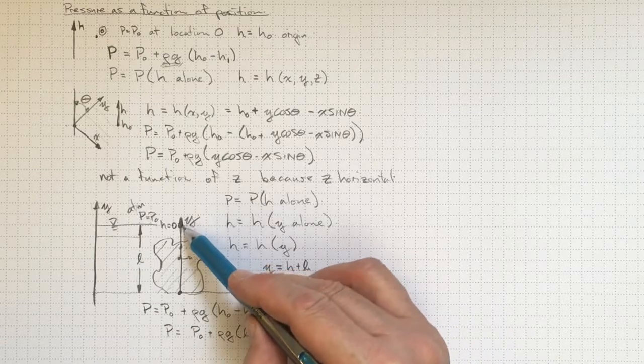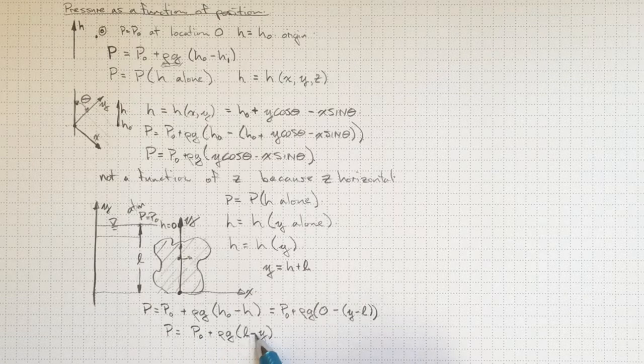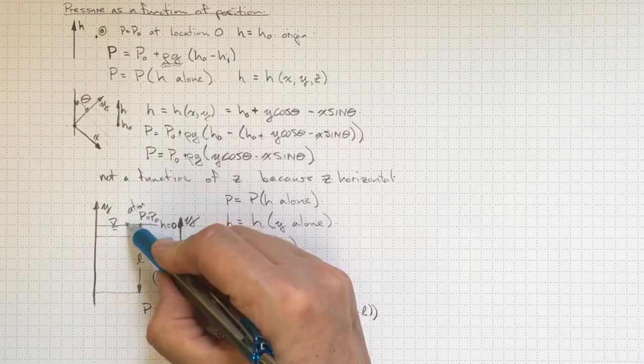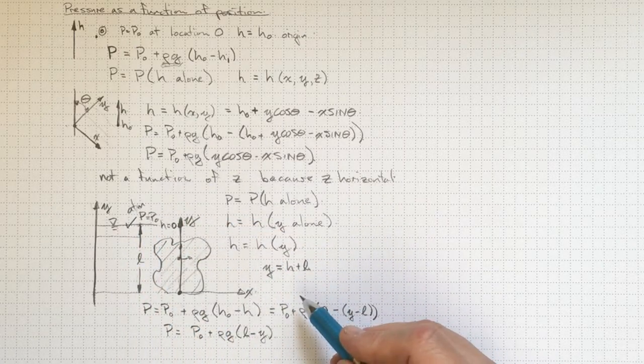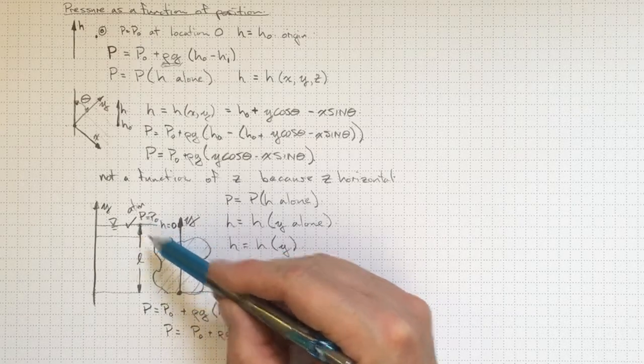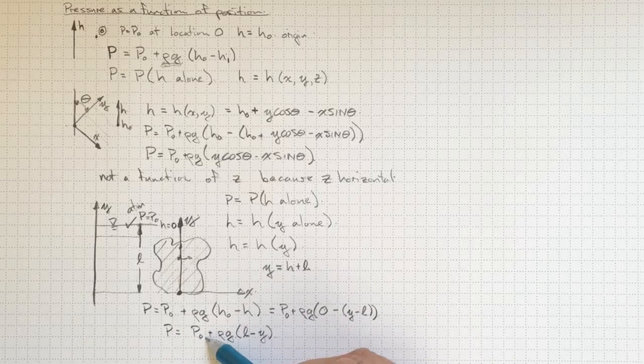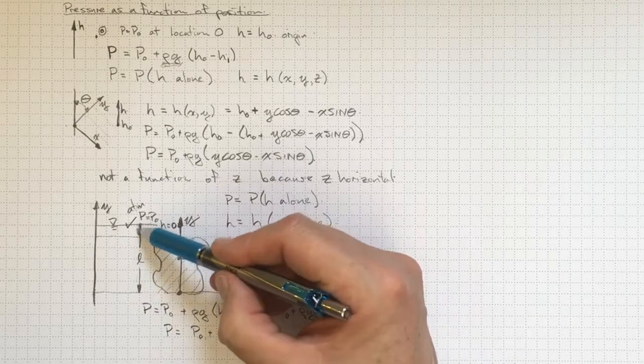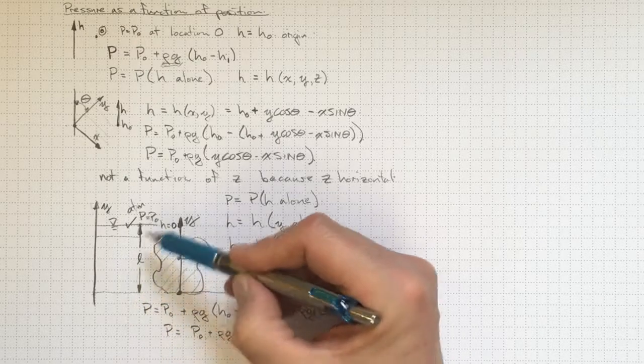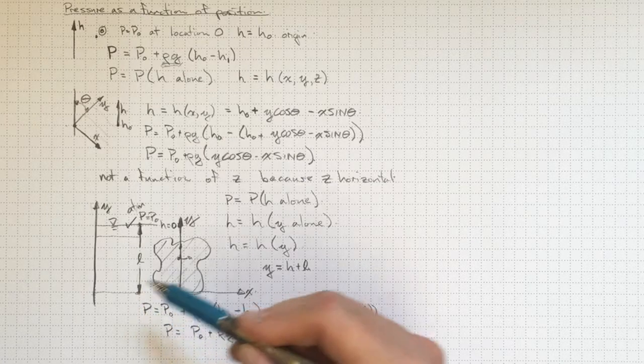So let's test it. At y equals l, we're up at the surface here, and p equals p0 plus rho g times l minus l. So p is equal to p0, so it checks out here. And let's go down to the bottom here, where we're under the water. We're l down below the water, y is equal to 0, so p is equal to p0 plus rho g times l. So it gives us the right answer at the surface. It gives us the right answer a distance l below the surface.